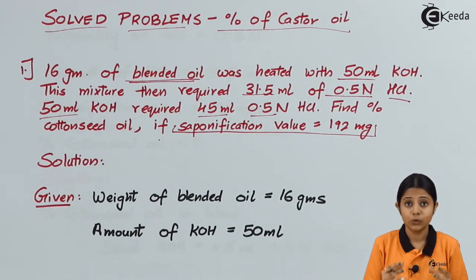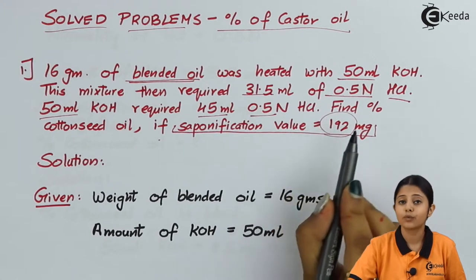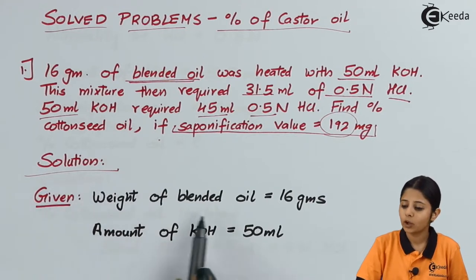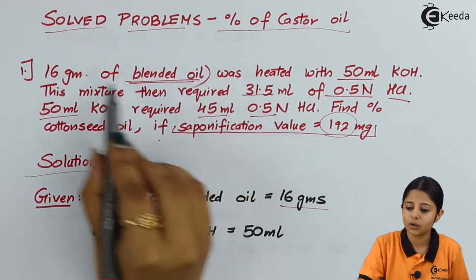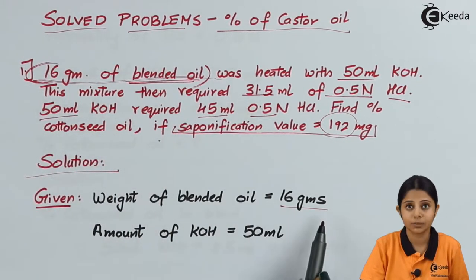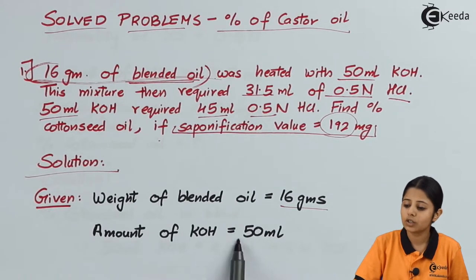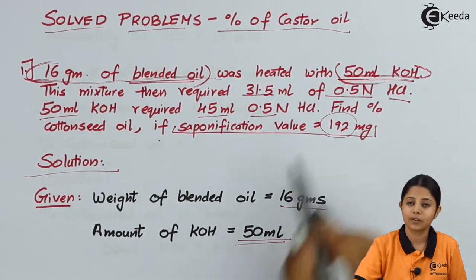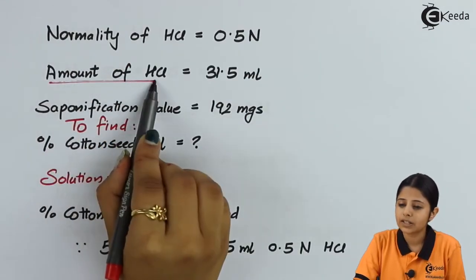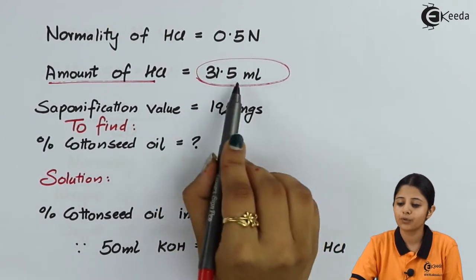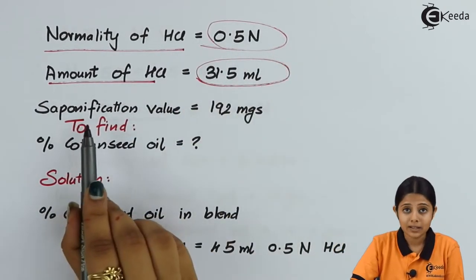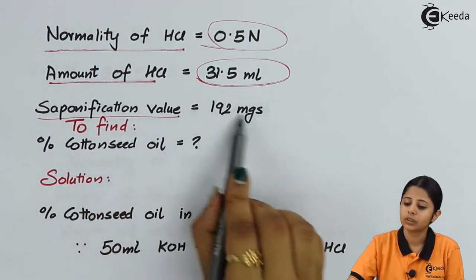Since the saponification value is already given, we can use the saponification value formula, replace the value with 192, and find the remaining missing components. The given information is: weight of blended oil is 16 grams; amount of KOH is 50 ml; amount of HCl is 31.5 ml with normality 0.5 normal; and the saponification value is 192 mg.